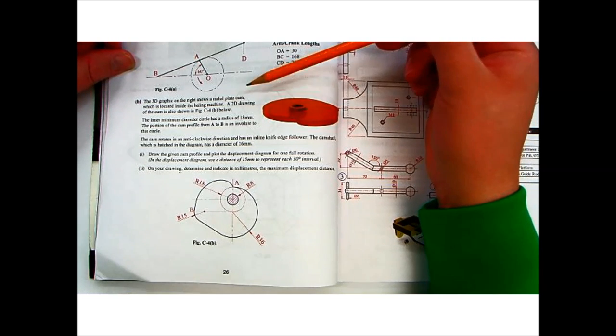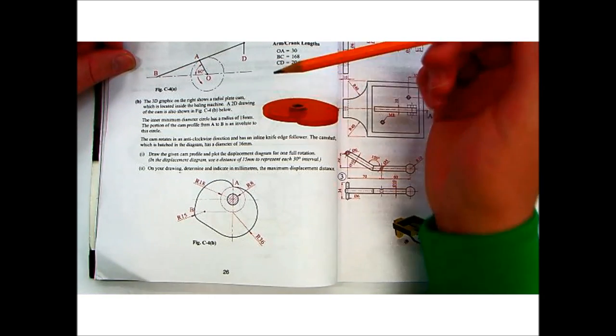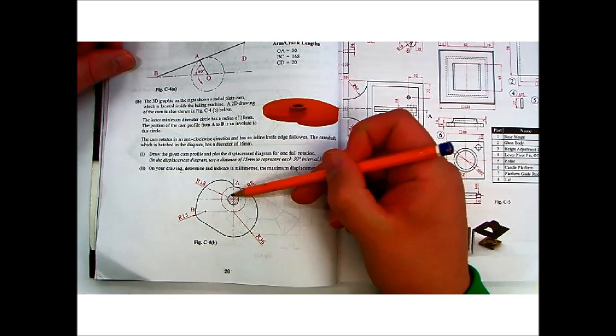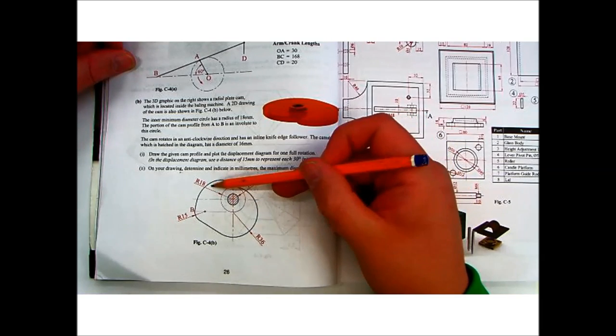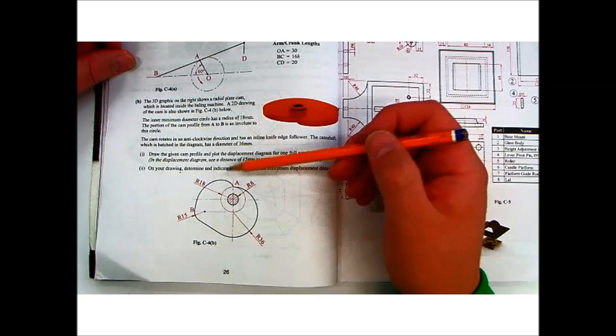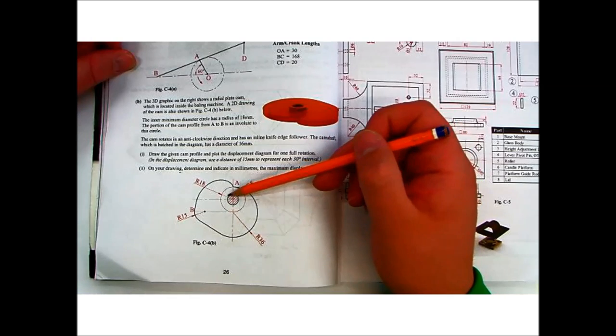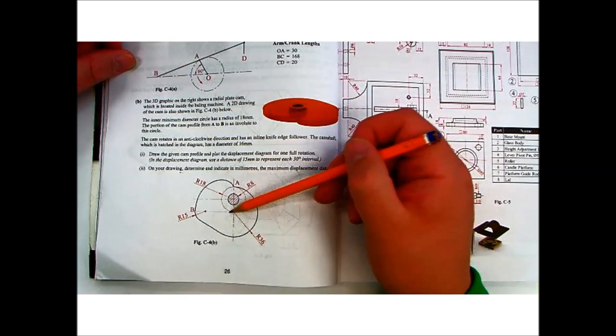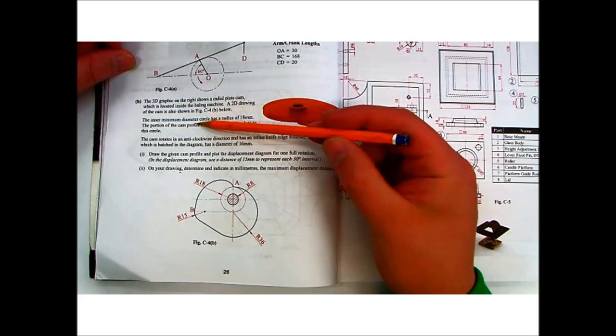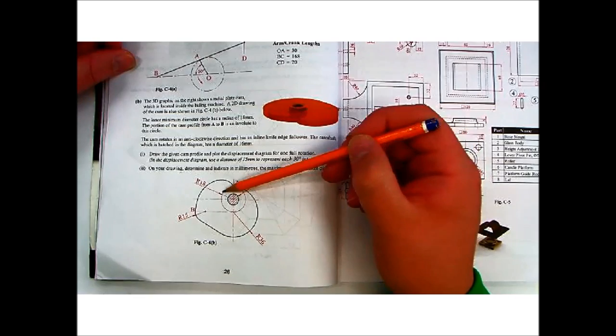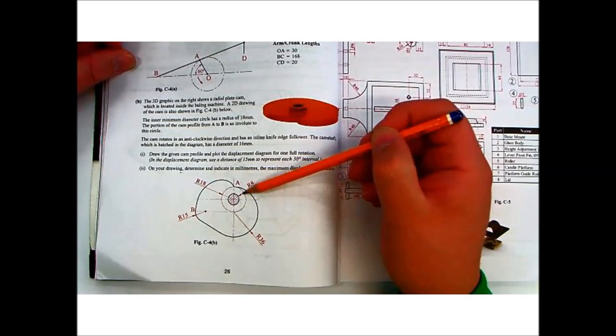The inner minimum diameter circle has a radius of 18mm, so that's your CAM shaft. The minimum radius is 18mm, and a portion of the CAM profile from A to B is an involute of the circle, so A to B there is an involute of that circle. The radius 18 is the minimum radius there of the circle.